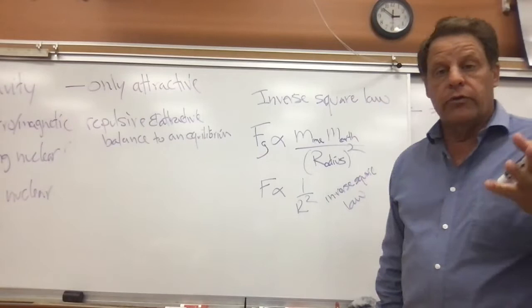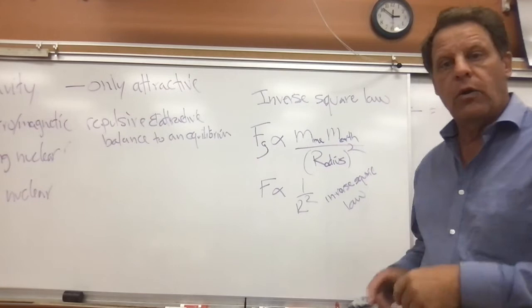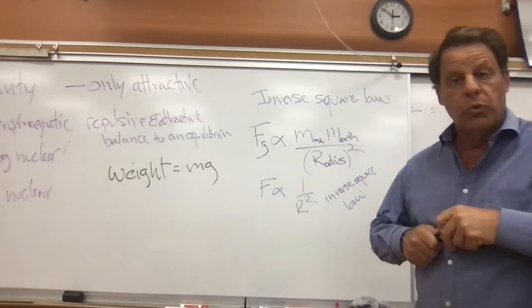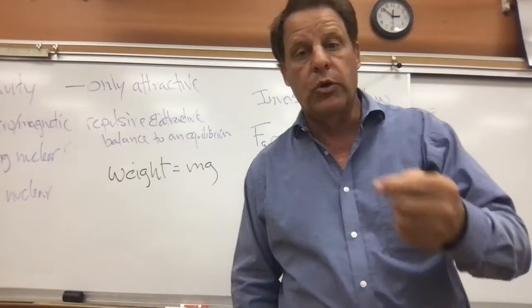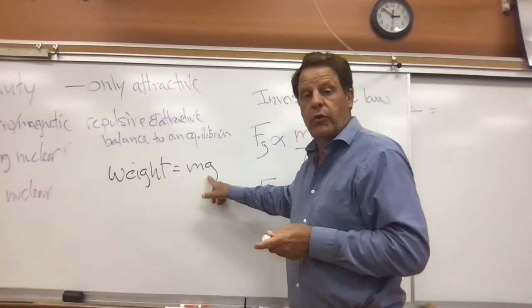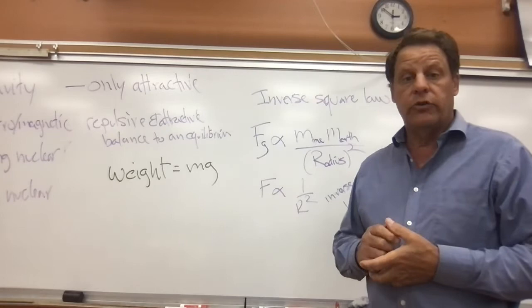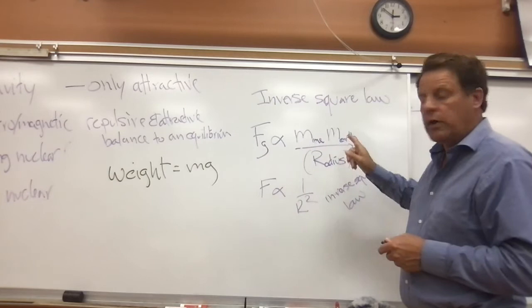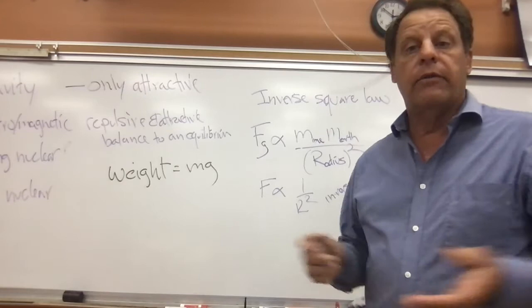If we think about the force of gravity on Earth — for example, my weight equals mg, mass times gravity, which is a force because gravity is an acceleration. If we went to the moon, your weight would be less, but your mass would be the same. So the acceleration due to gravity would be less. The force is proportional to the masses involved — me and the Earth, or me and the moon.